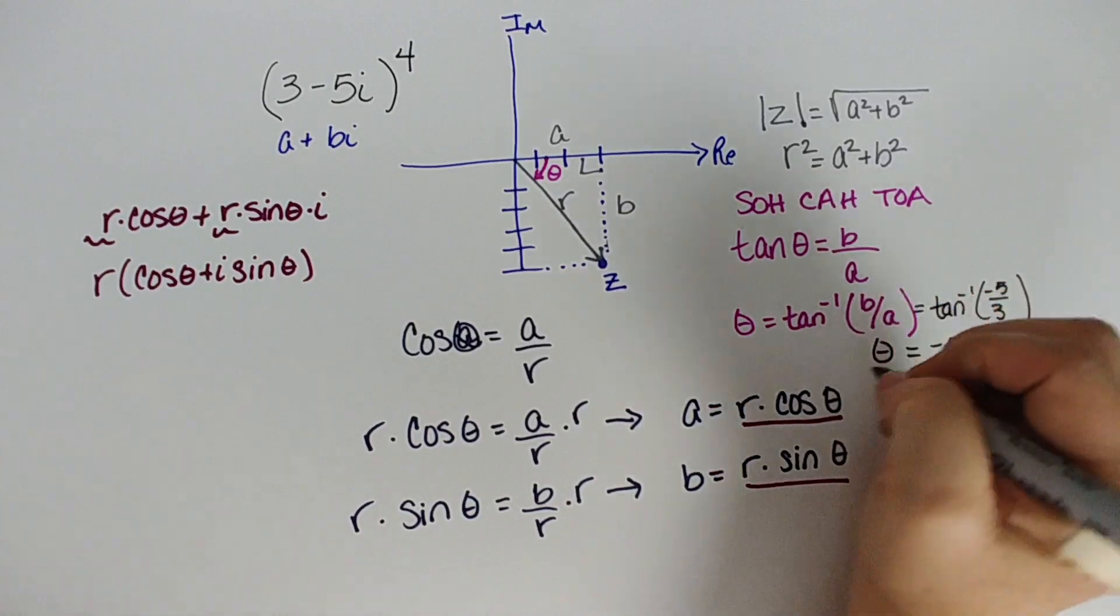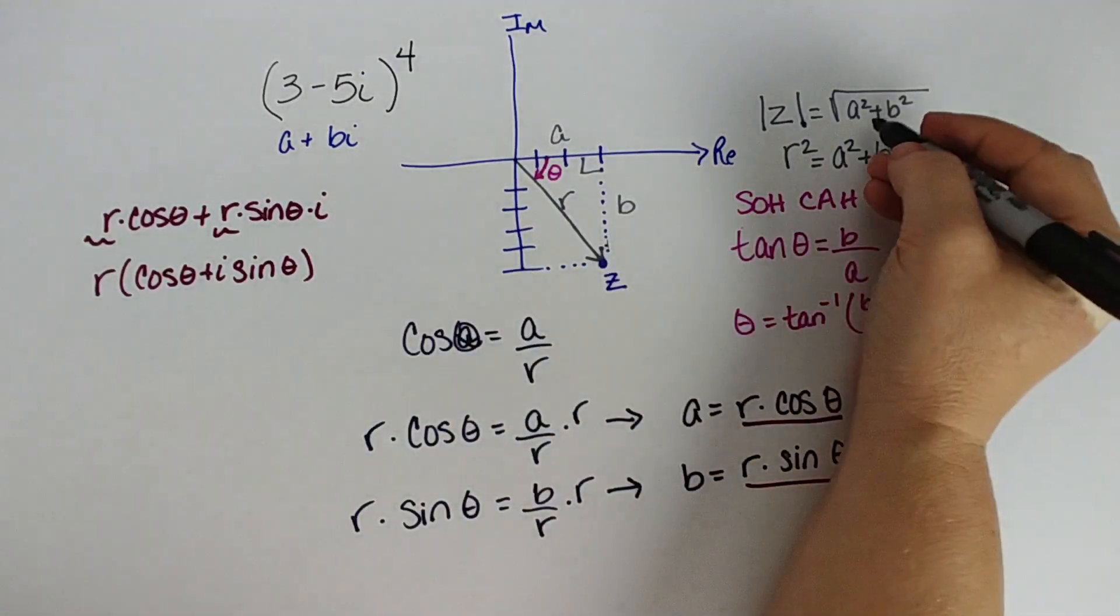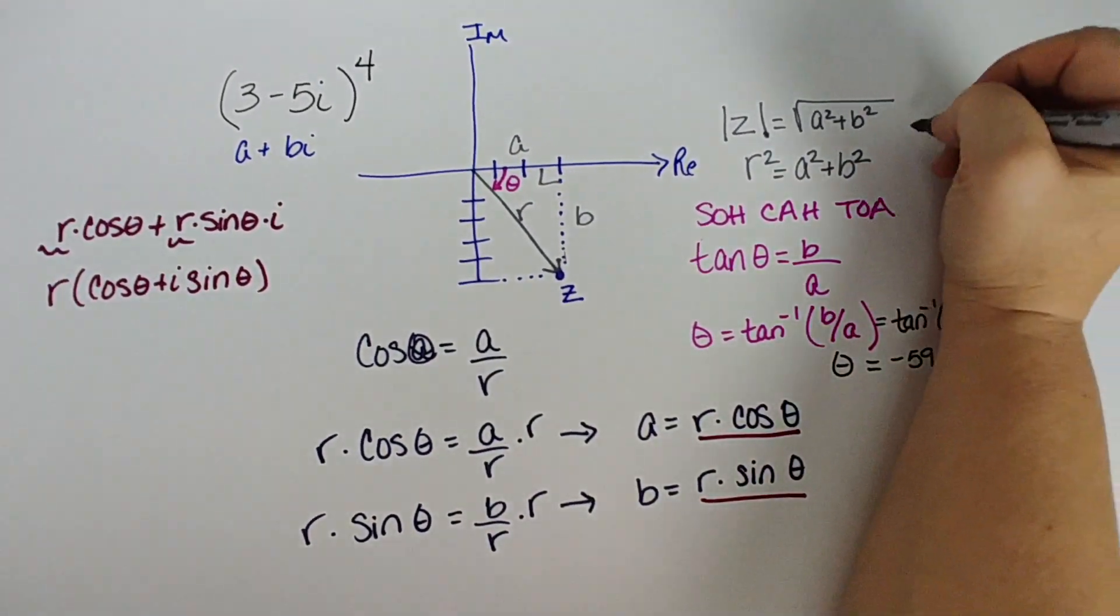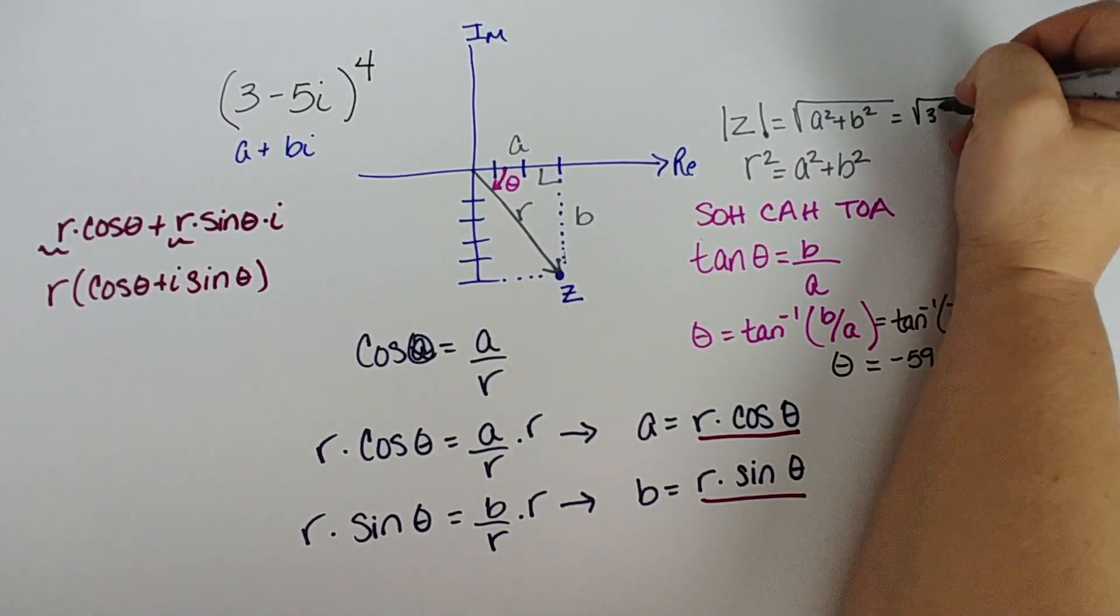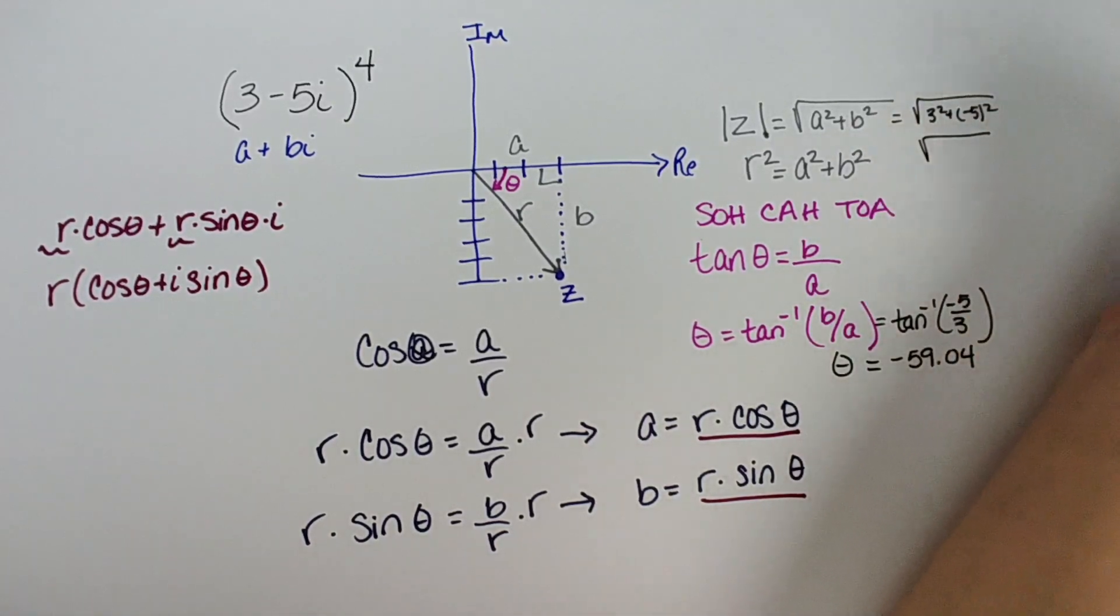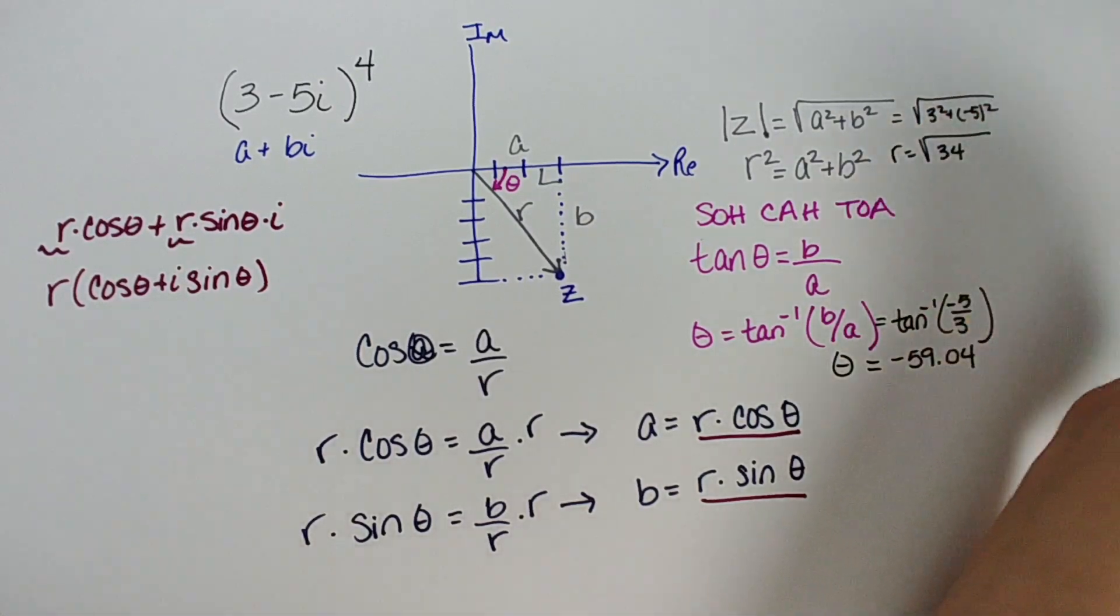Now I need to solve for my r value. I told you way up here that r was the square root of a squared plus b squared. So three squared plus negative five squared. That's going to be nine plus 25. So square root of 34 is our r value.